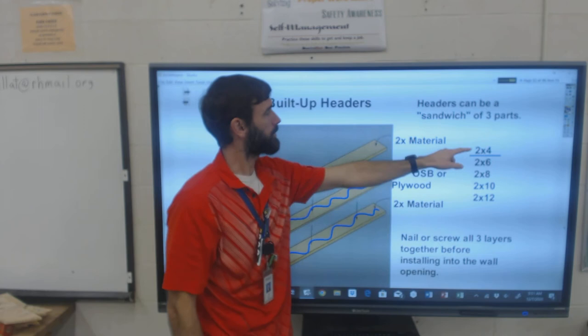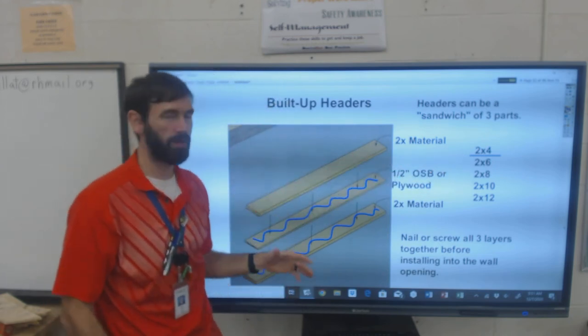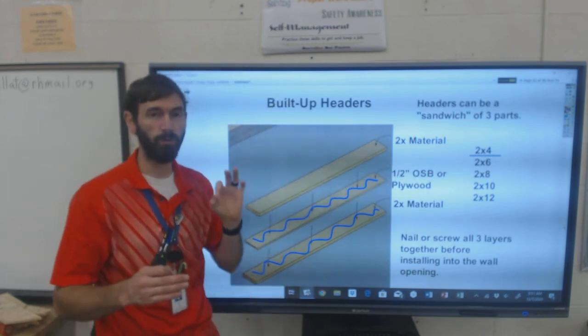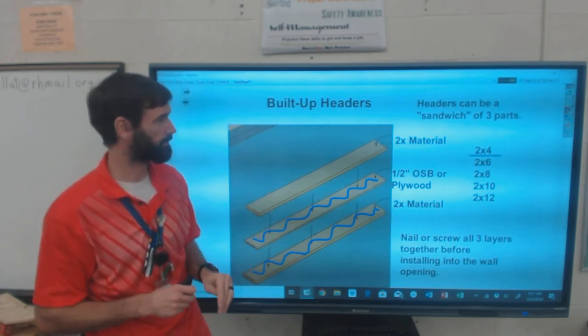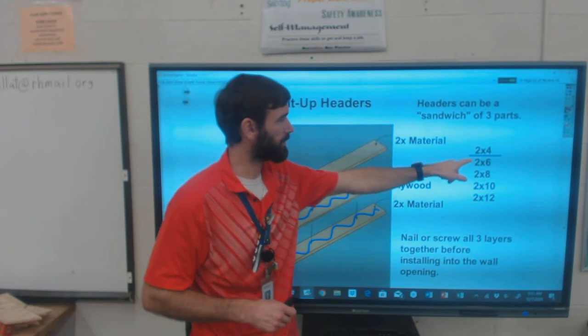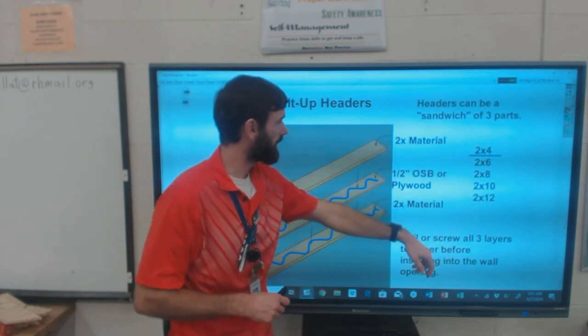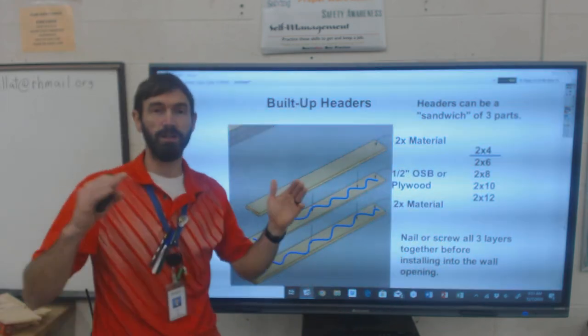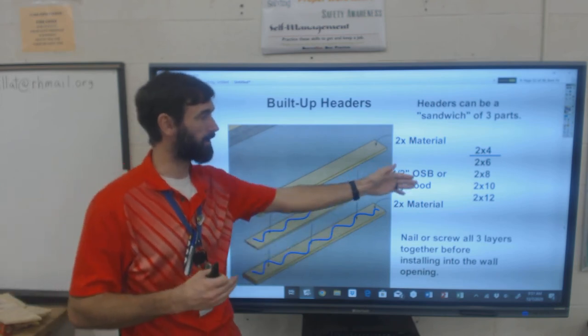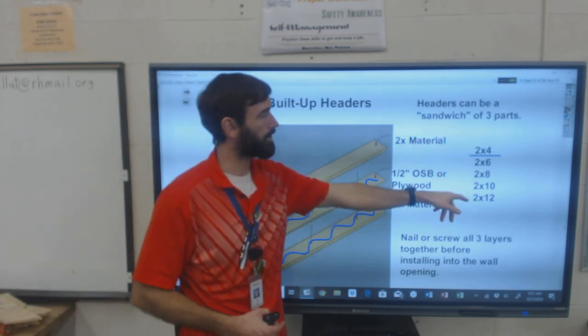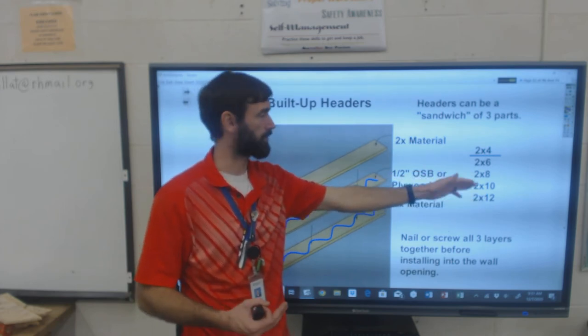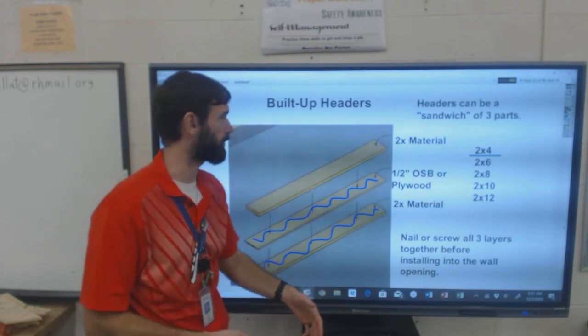Two-by-fours, you do this for an interior wall. Interior wall is okay. Exterior wall, two-by-four built-up header, generally not okay. That's when you go to two-by-sixes or above. Obviously the longer the opening is, the bigger it needs to be. But consult your building codes and it will tell you when you can use a two-by-eight versus a two-by-ten or two-by-ten versus two-by-twelve.